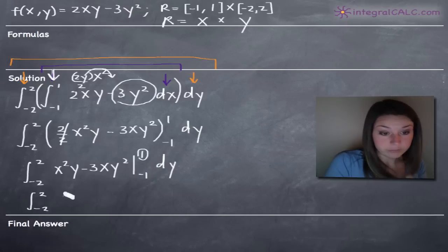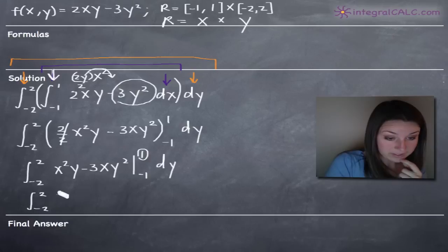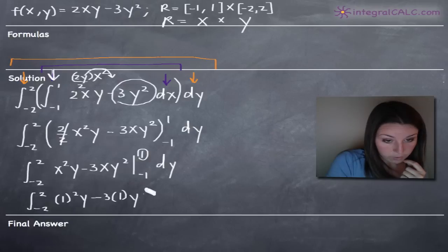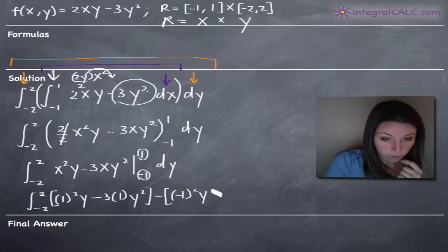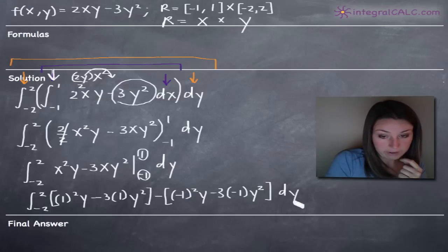We'll plug in our top number first, 1 for x, because we're taking the integral with respect to x. So we've got 1 squared y minus 3 times 1 times y squared. And from that, we will subtract what we get when we plug in the bottom number, negative 1. So we'll plug in negative 1 for x: negative 1 squared y minus 3 times negative 1 times y squared. Then dy out here.